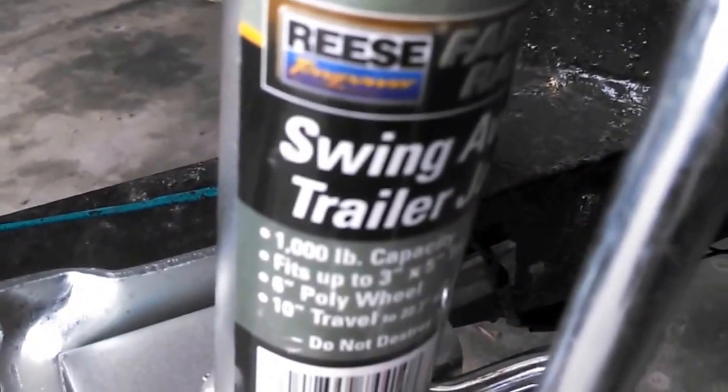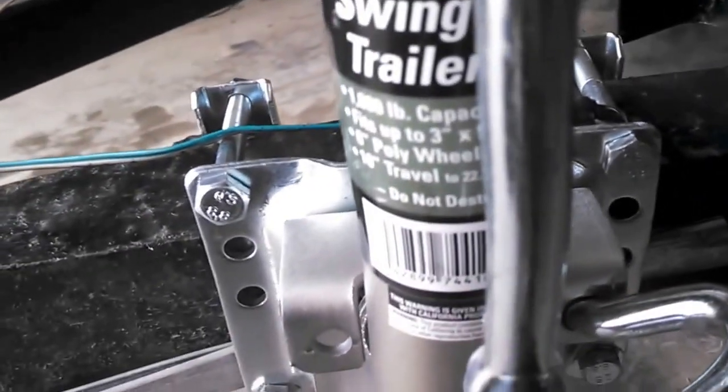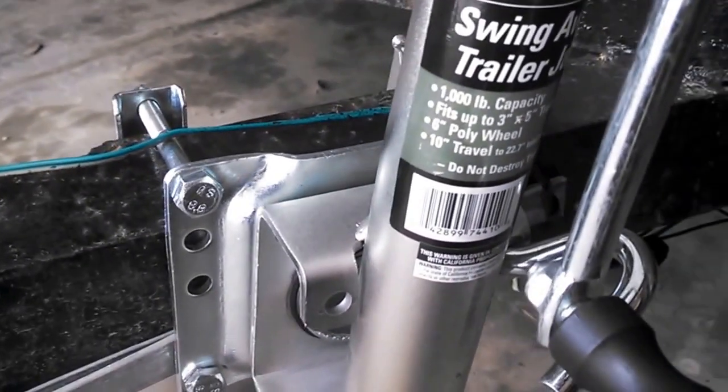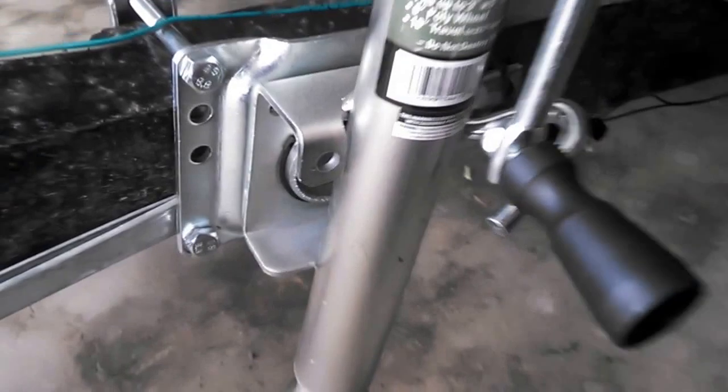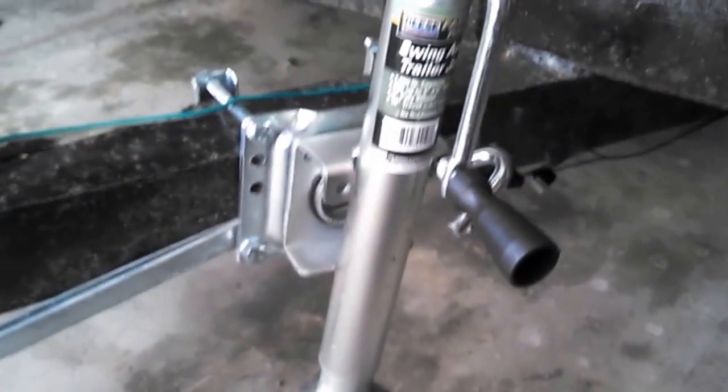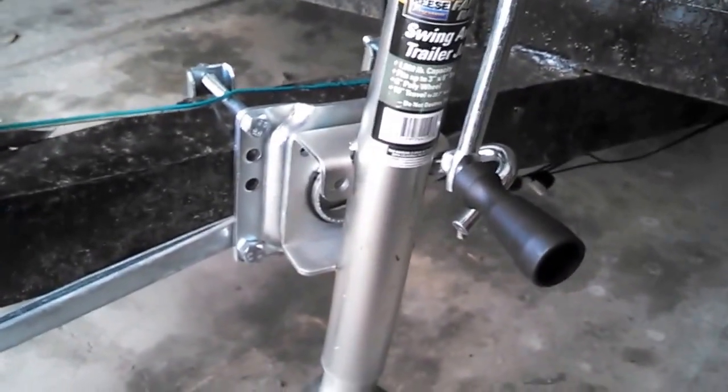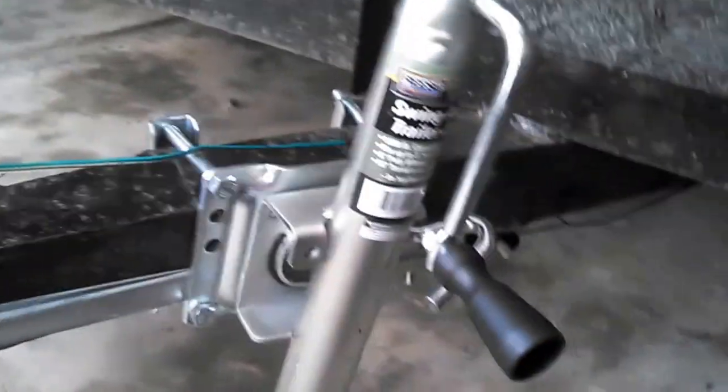So I have my Reese Swing Away Trailer Jack thingamajig here for mounting on my trailer. This one was already put on here when I got it. It was mounted on here like you see it now with this in there.